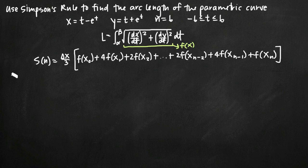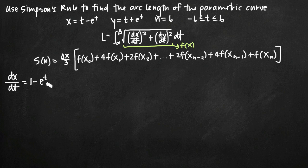We're going to take the derivative of x with respect to t, called dx over dt. Since t is our variable, the derivative is 1 minus e to the t — remember that the derivative of e to the t is just itself, so e to the t doesn't change. Then we take the derivative of y with respect to t, called dy over dt, and we get 1 plus e to the t. That's fairly straightforward.